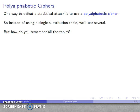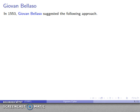There has to be a convenient way of writing this down or remembering it, because any time you require something to be written down, you run the risk that somebody is just going to steal the codebook. So in 1553, Giovanni Bellasso suggested the following approach to this problem.